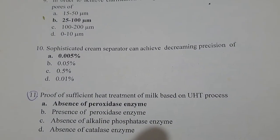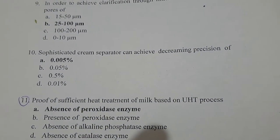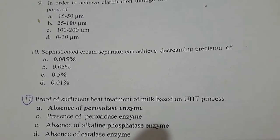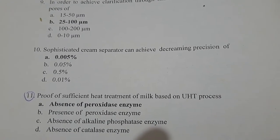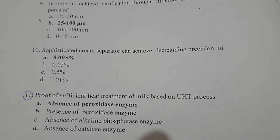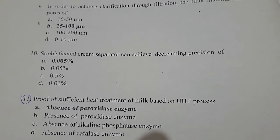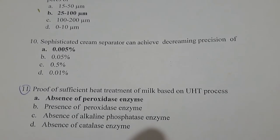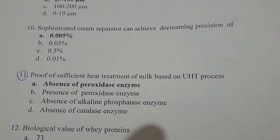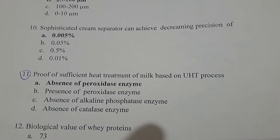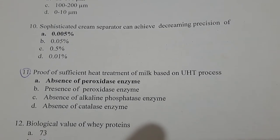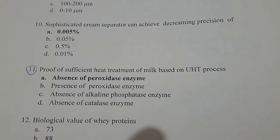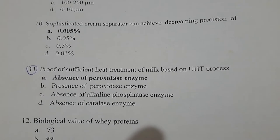A sophisticated cream separator can achieve deskimming precision of 0.005%. Proof of sufficient heat treatment of milk based on UHT process is the absence of peroxidase enzyme.